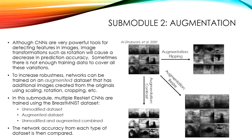Submodule 2 is augmentation. Although CNNs are very powerful tools for detecting features in images, image transformations such as rotation will cause a decrease in prediction accuracy, and sometimes there's not enough training data to cover all these variations. To increase robustness, networks can be trained on augmented data sets that have additional images created from the originals using scaling, rotation, cropping, etc. In this submodule, multiple ResNet CNNs are trained using the Breast-MNIST data set — using the unmodified data set, an augmented data set, and the two combined — and the network accuracy from each is compared.